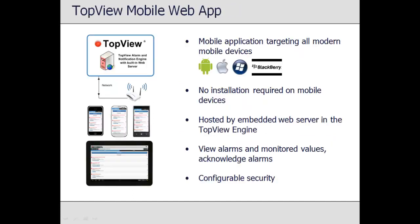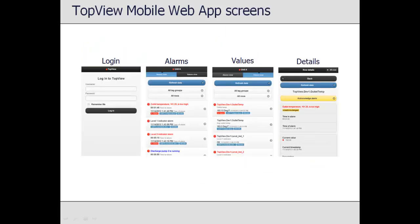The Top View Mobile Web App is an interactive application targeting mobile devices, though it can run in any modern web browser. Because the application is web-based, no installation is required on the mobile device, and because it is hosted by a web server embedded within the Top View engine, no external web server configuration is required. Users can view current alarms and values, acknowledge alarms, and filter views by tag group. User login can be required, with the ability to assign permissions including alarm acknowledgement. The Mobile Web App runs on any device with network access, looks and behaves like an installed application, and allows easy navigation between alarms view and values view.